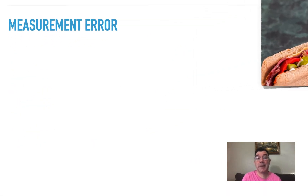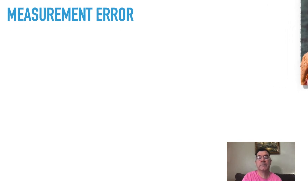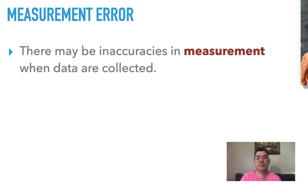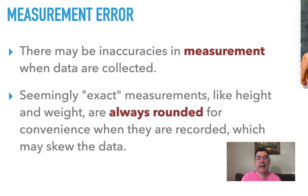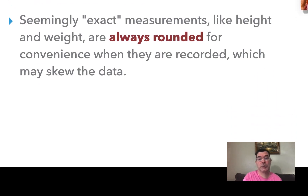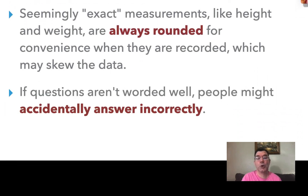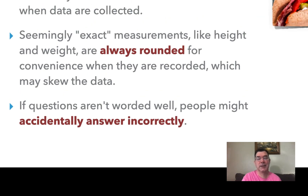Another kind of error is measurement error. If you are asking for numerical data from people, they tend to record inaccurate information — they may measure things incorrectly or tell you measurements that are actually incorrect. Height and weight might be rounded to the nearest inch or pound, whereas you would want it more accurate than that. Or they might give you the information that they wish were true instead of what is actually true, and that might skew the data. Also, if you don't word your questions well, people might accidentally answer incorrectly just because they think you're asking something, but you're asking something else.